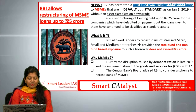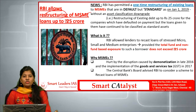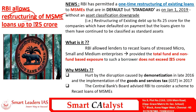The first article is RBI allows the restructuring of MSME loans up to 25 crores. The RBI has recently permitted a one-time restructuring of existing loans to MSMEs which are in default state but are standard assets. Standard assets are those which carry very low risk or whose repayment is regular.